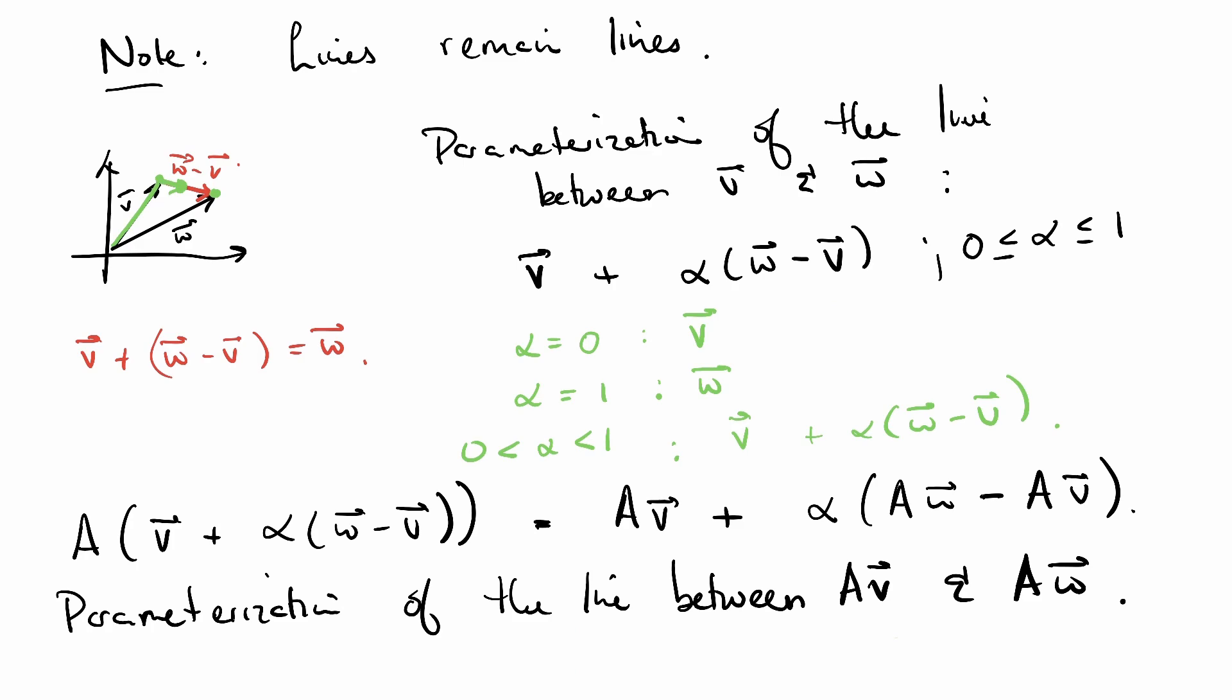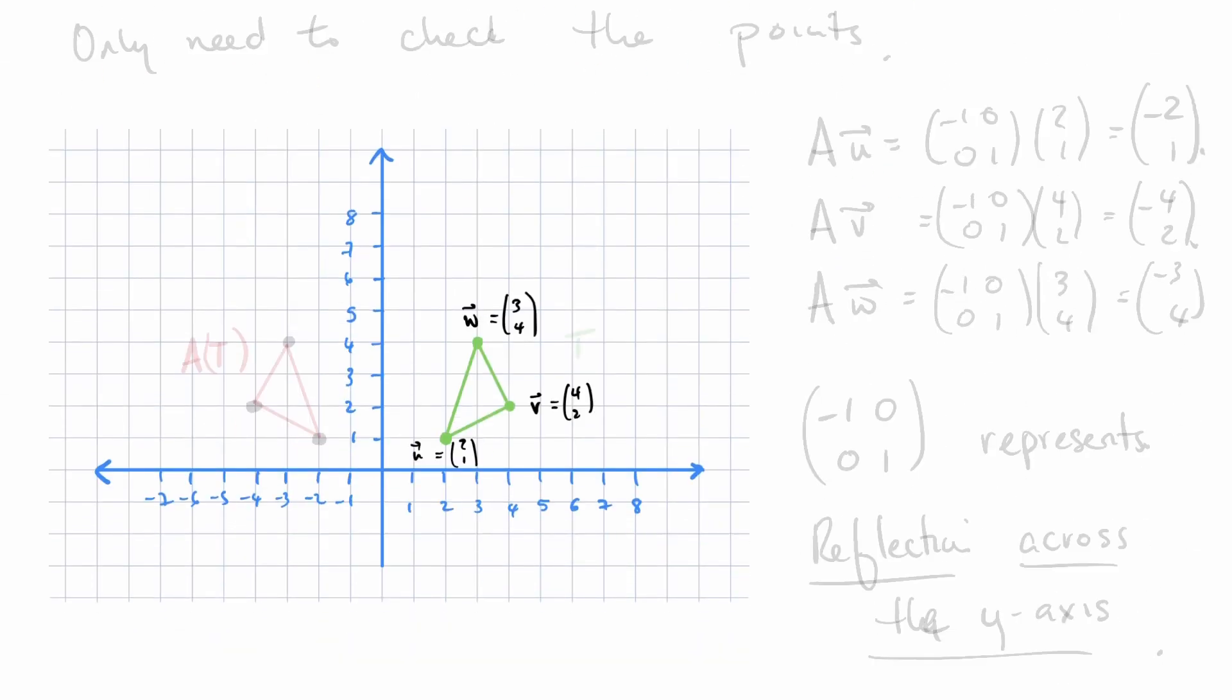All of this is to say we only need to figure out where the points in the triangle go and then the lines between them get sent to the lines between the new points. Only need to check the points.